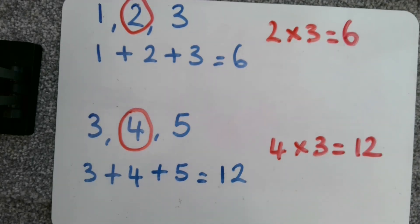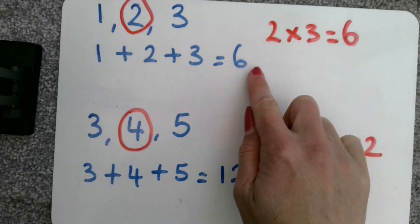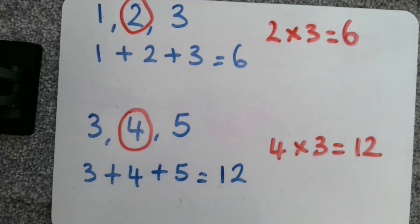Oh, I used two different sets of consecutive numbers and when I multiplied that middle number by three, I got the same answer. I'm now going to show you why I got the same answer.